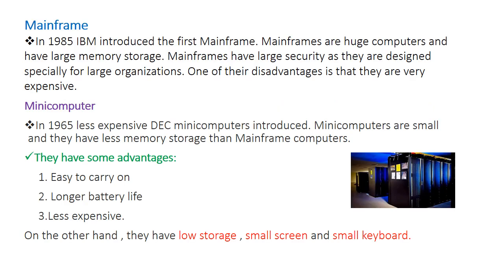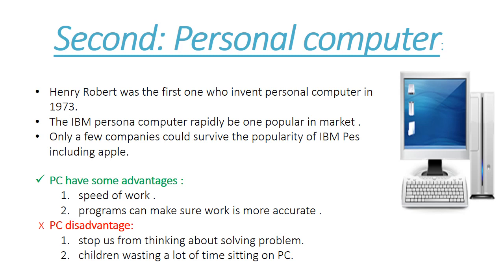First, we are going to talk about the mainframe and minicomputer era. Mainframes were introduced in 1965 — they are huge computers with large memory and storage. Minicomputers were also introduced in 1965. They are smaller than mainframes, less expensive, and have less storage than mainframe computers.